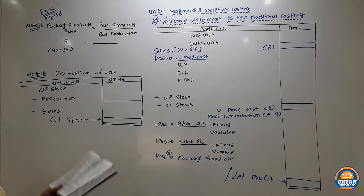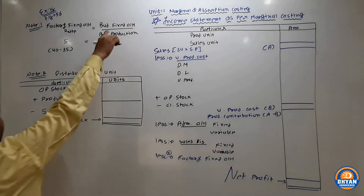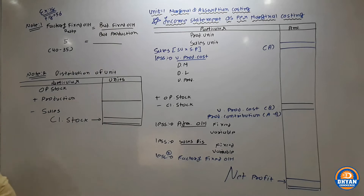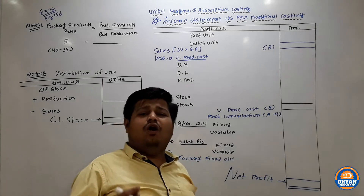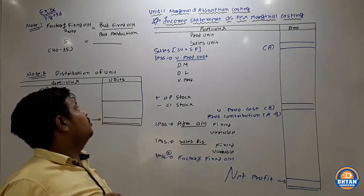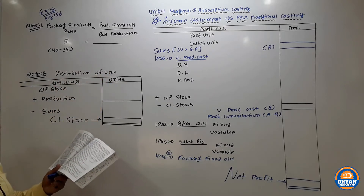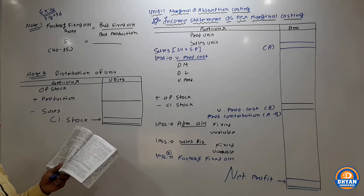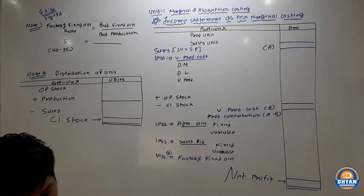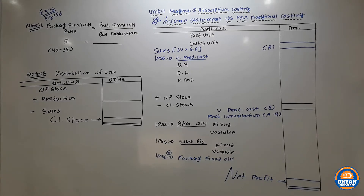Budgeted production is not directly given, nor is budgeted fixed overhead. So Note 1 stays pending. We move to Note 2: Distribution of Units. For this, we use the opening and closing stock values. If production cost or sales cost is given, we can derive the units from those values.